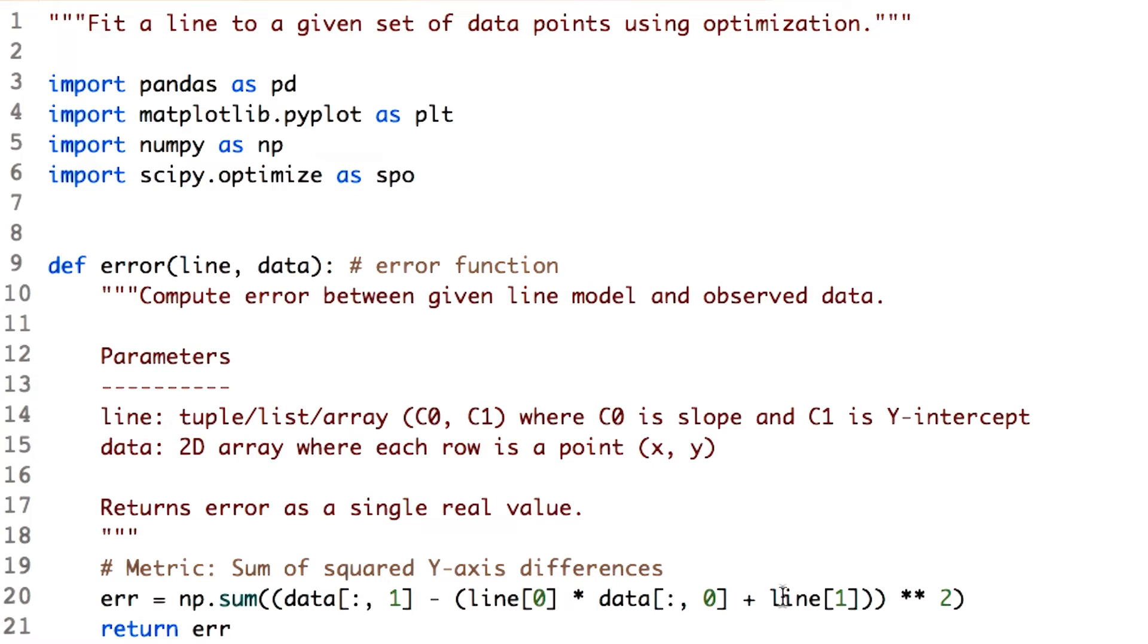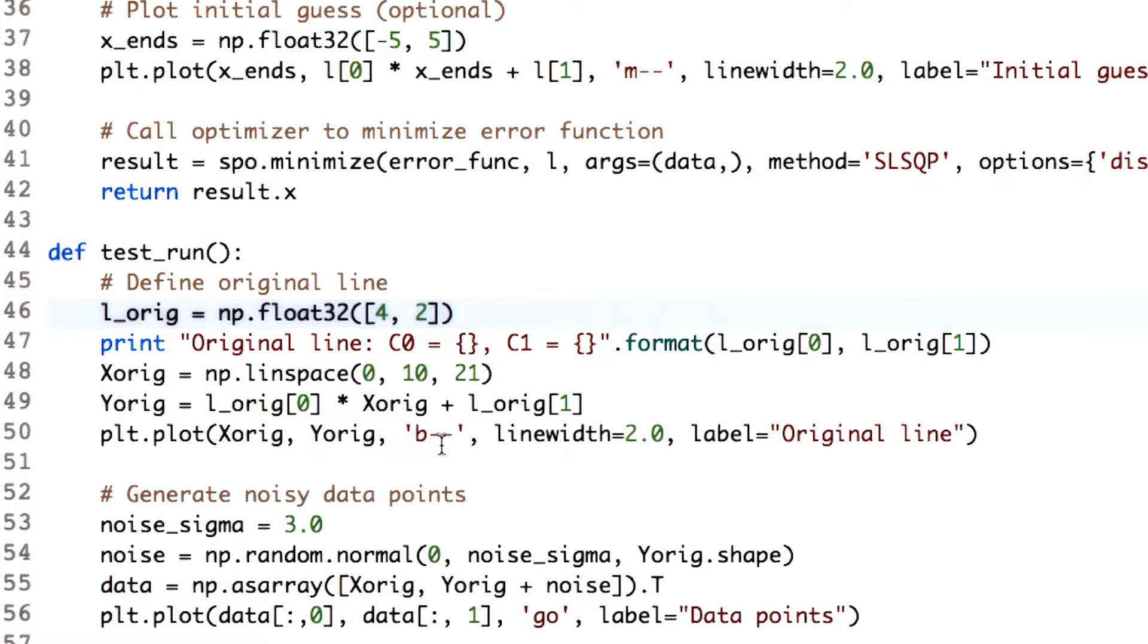We've added some code now to illustrate how to use the minimizer to find the equation of the line. We start with our original line that the minimizer doesn't know. So it's our secret, but we're testing it to see if the minimizer can discover the equation of this line. Here's the equation for our line.